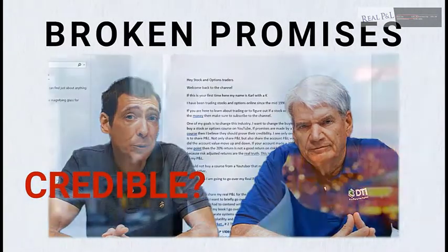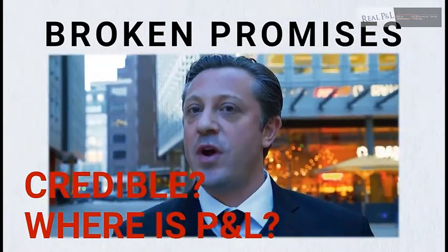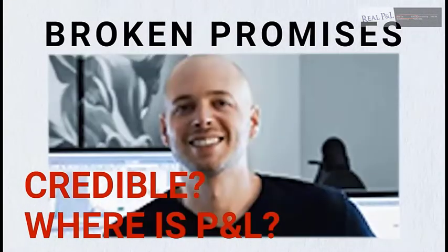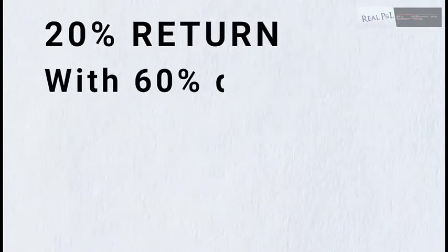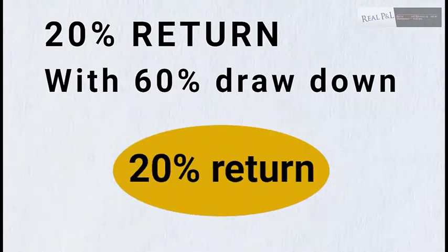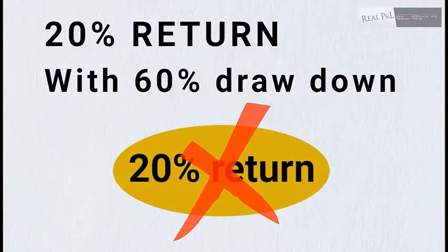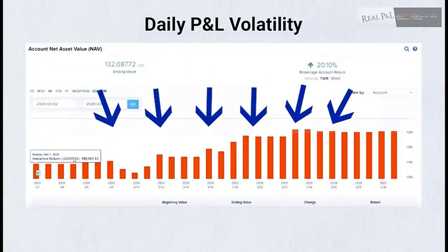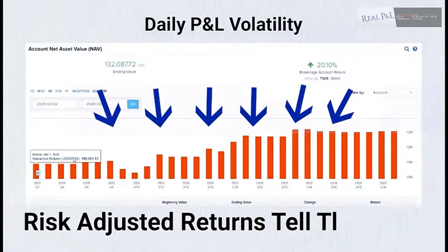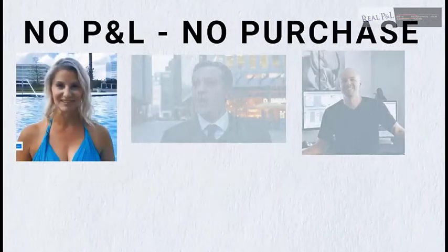If promises are made by a YouTube instructor when selling a course, I believe they should prove their credibility. I see only one way to prove credibility, and that is to share P&L — and not only share P&L, but also share the account P&L volatility, which means how much did the account move up or down. If the account made 20% return but it was down 60% at one point, then the 20% return is not a good return on risk. Sharing the P&L volatility is important because risk-adjusted returns are the real truth, and this is why I share my P&L and show my daily moves.